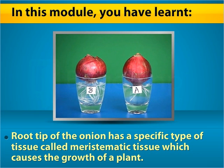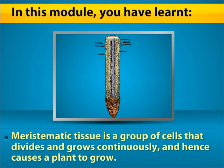Meristematic tissue is a group of cells that divides and grows continuously and hence causes a plant to grow.